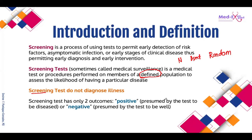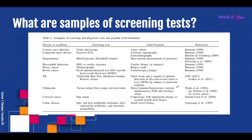A screening test has only two outcomes: it could either be positive or negative — no in between. Positive means the person is presumed by the test to be diseased, and negative means presumed to be well. Once a screening test is positive, you have to do several confirmatory tests to confirm if that individual is diseased or not. For example, to screen for urinary tract infection, you use urinalysis and confirm with urine culture.